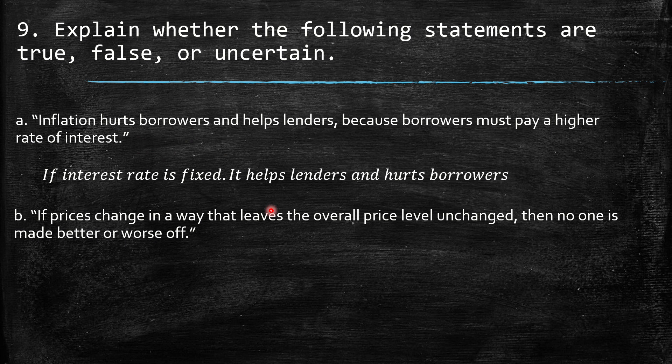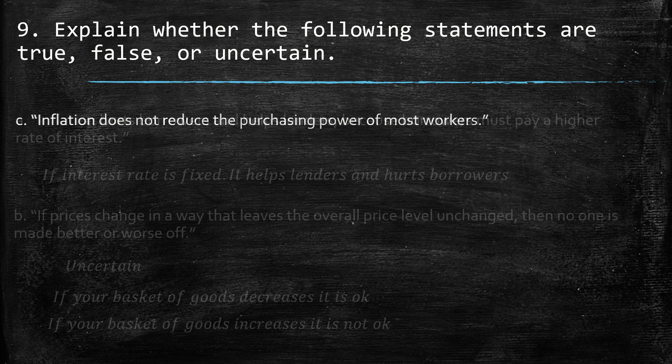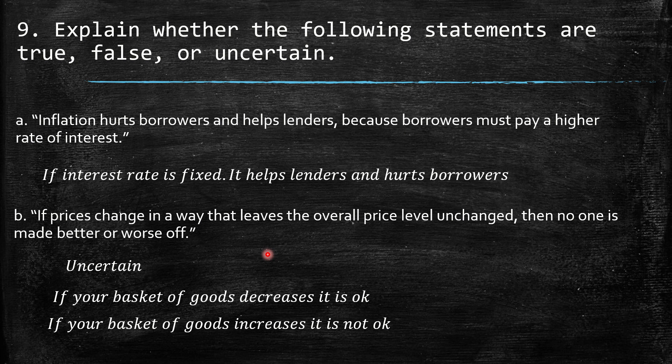Statement B: 'If prices change in a way that leaves the overall price level unchanged, then no one is made better or worse off.' This is uncertain. If the basket of goods you consume has prices that decrease, you are better off. However, if the prices in your consumption basket increase, you are worse off. It depends on which basket of goods each person is consuming, so the effect differs across individuals.